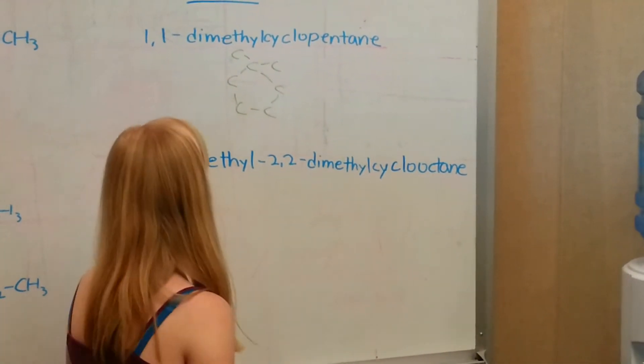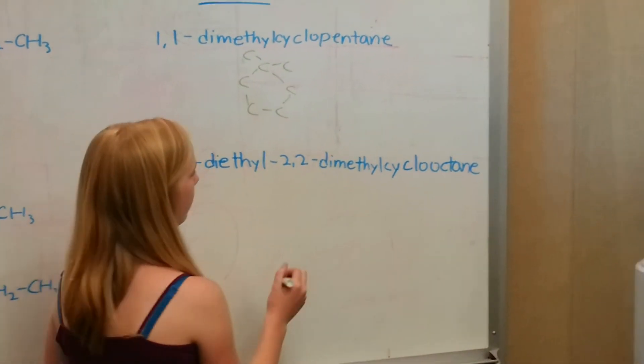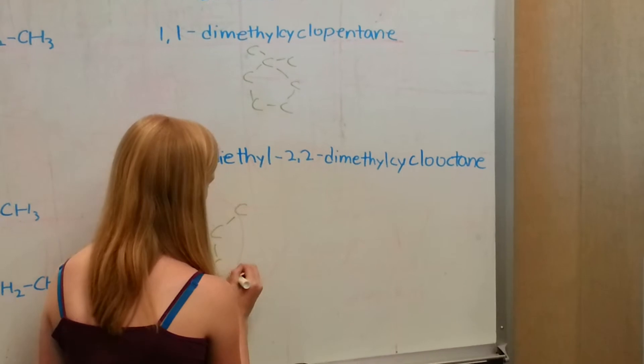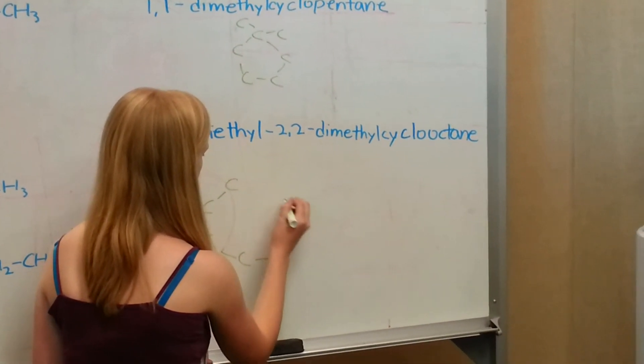And then here we've got a long one. 1,3-diethyl-2,2-dimethyl-cyclooctane. So it's an octane in a circle. 2, 3, 4, 5, 6, 7, 8.